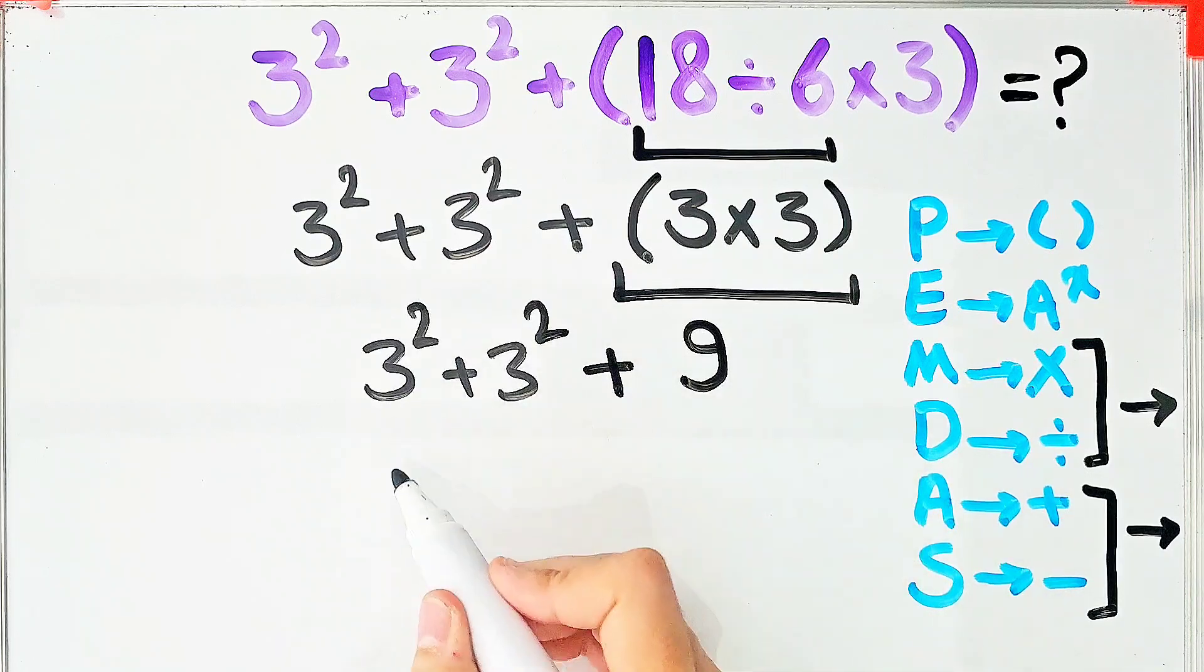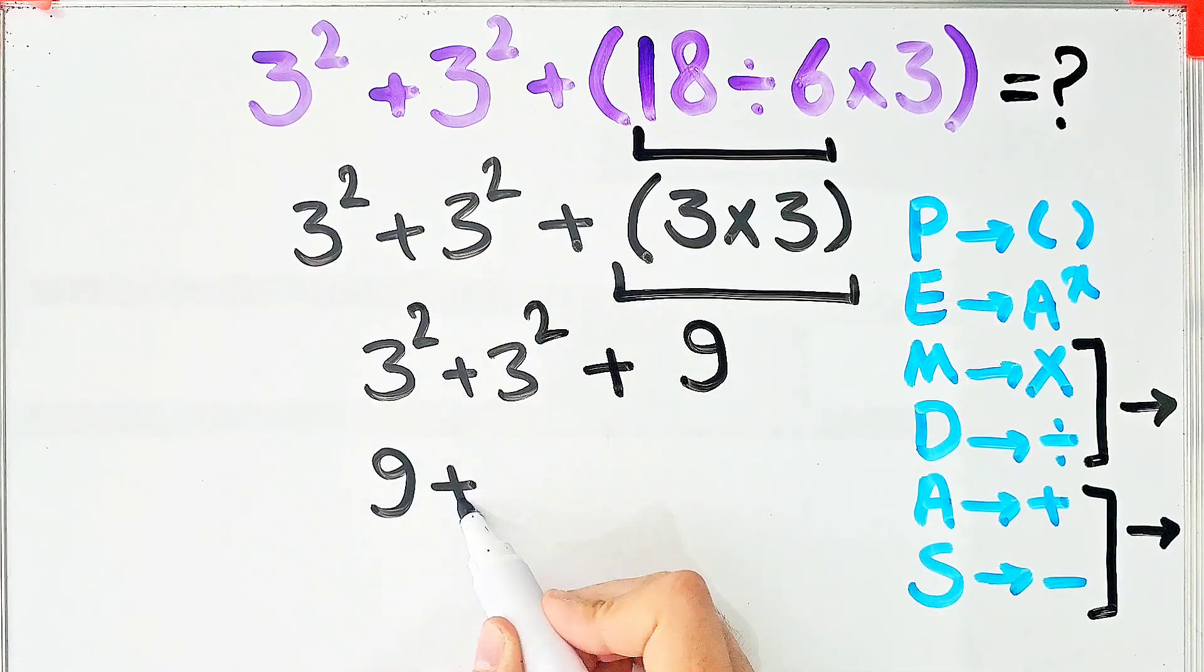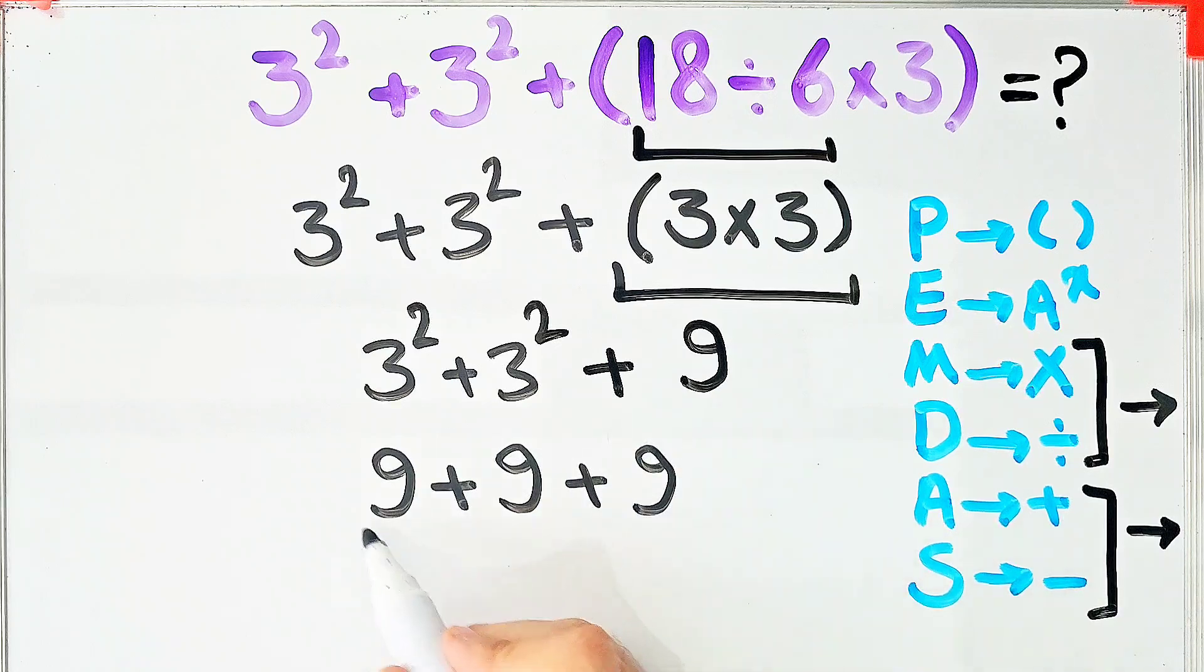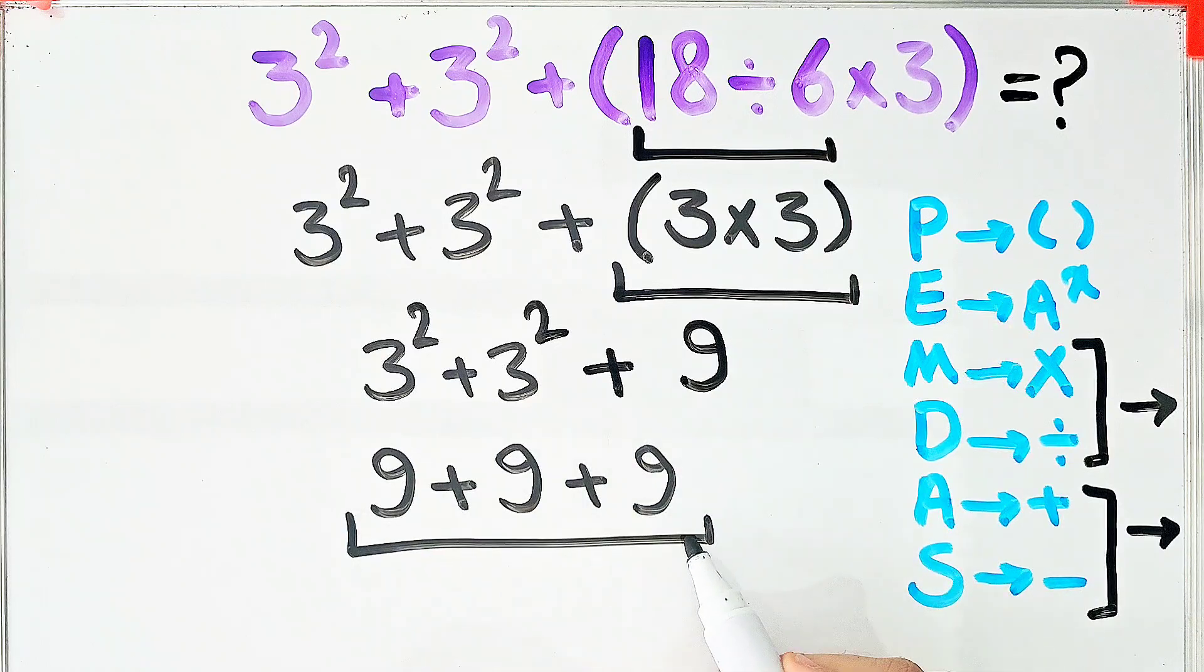3 to the power of 2 equals 9. We have 9 plus 9 plus 9. The final answer of this question equals 27.